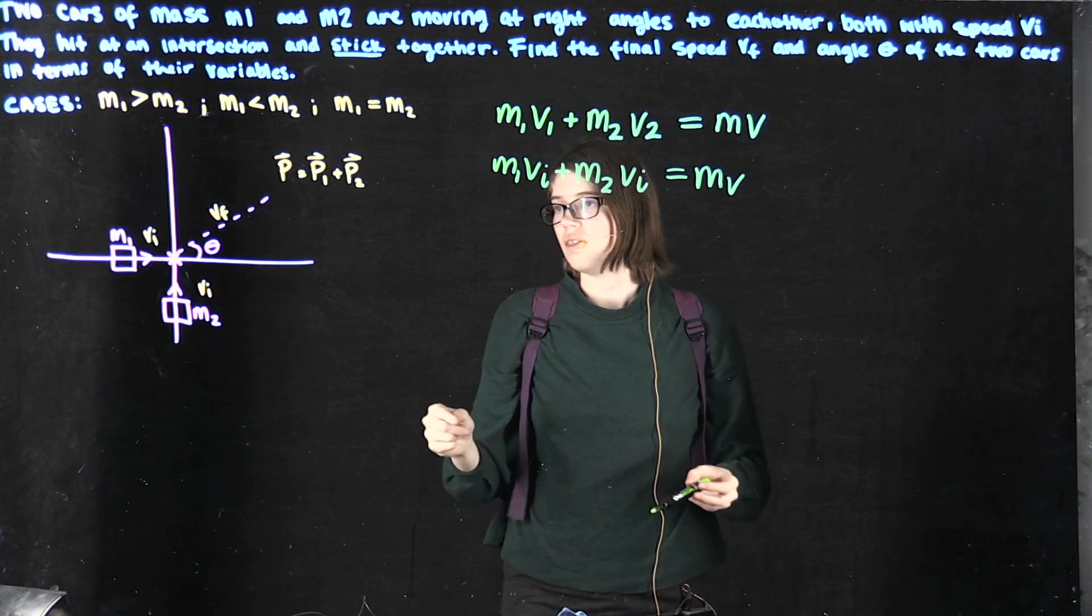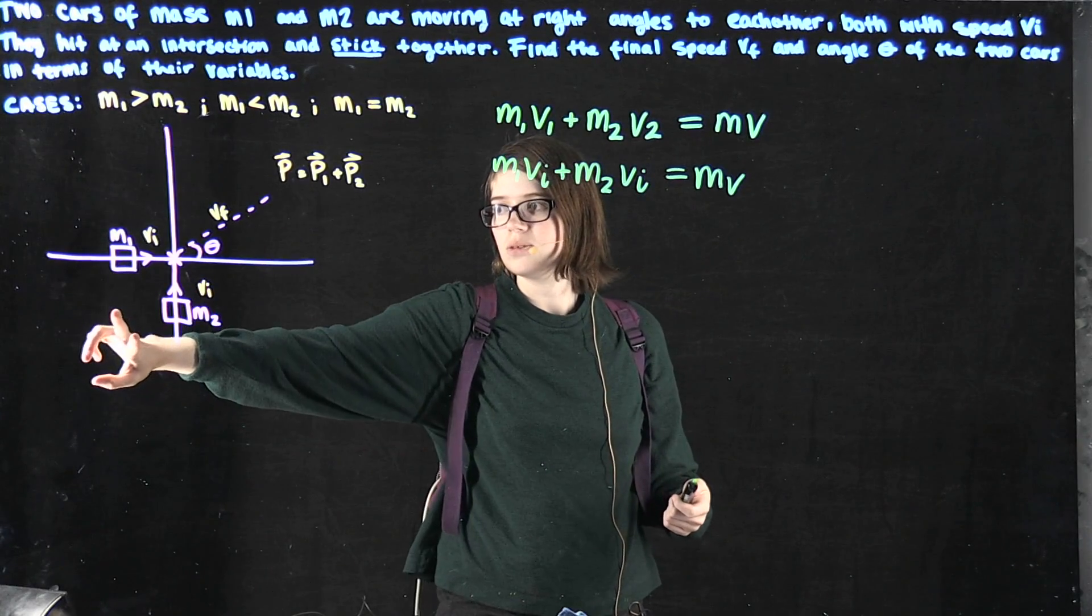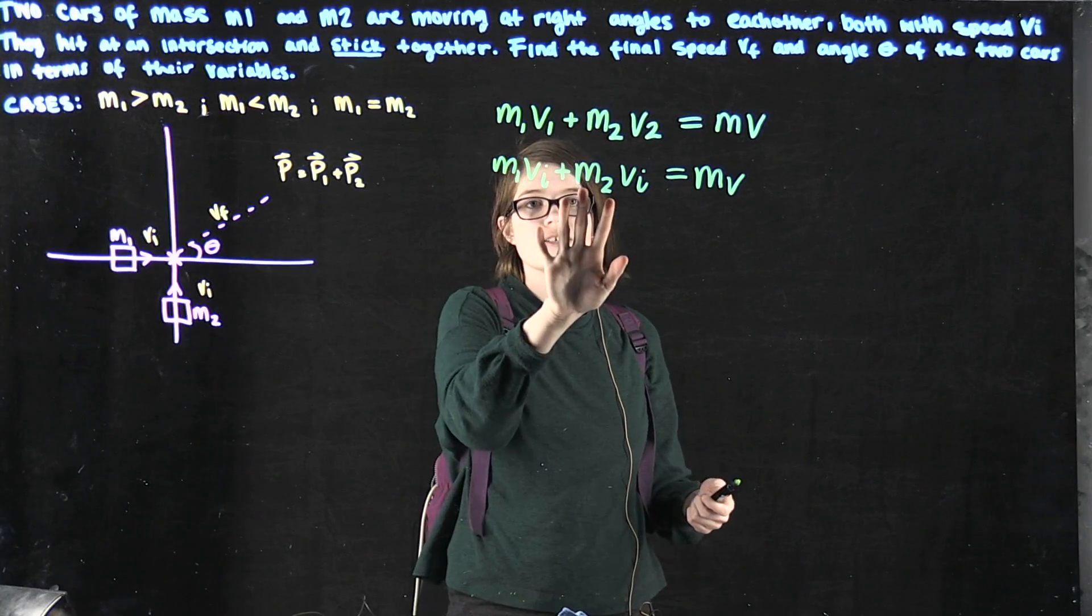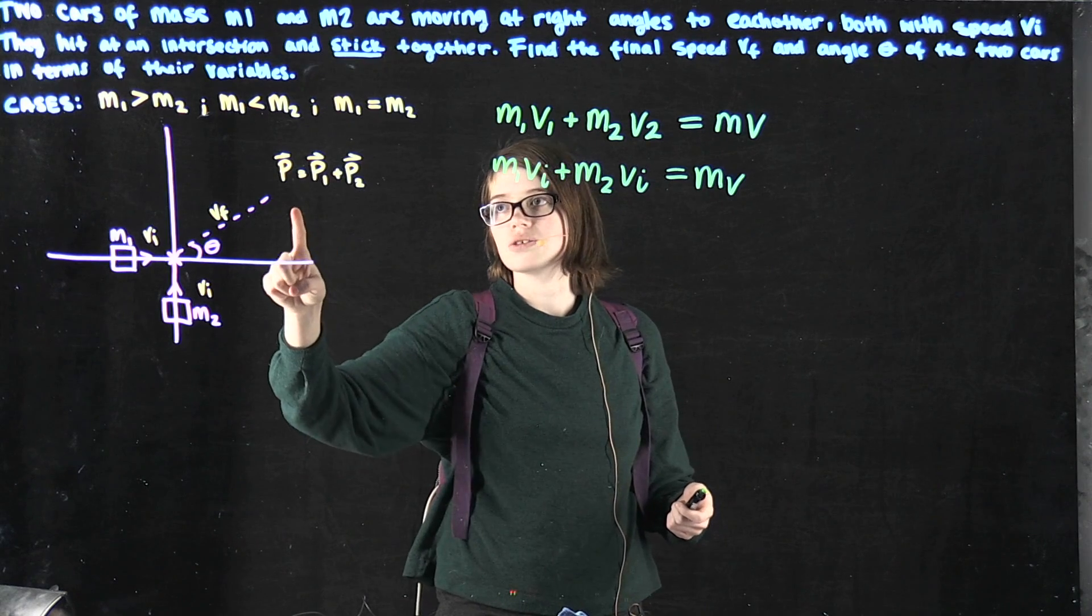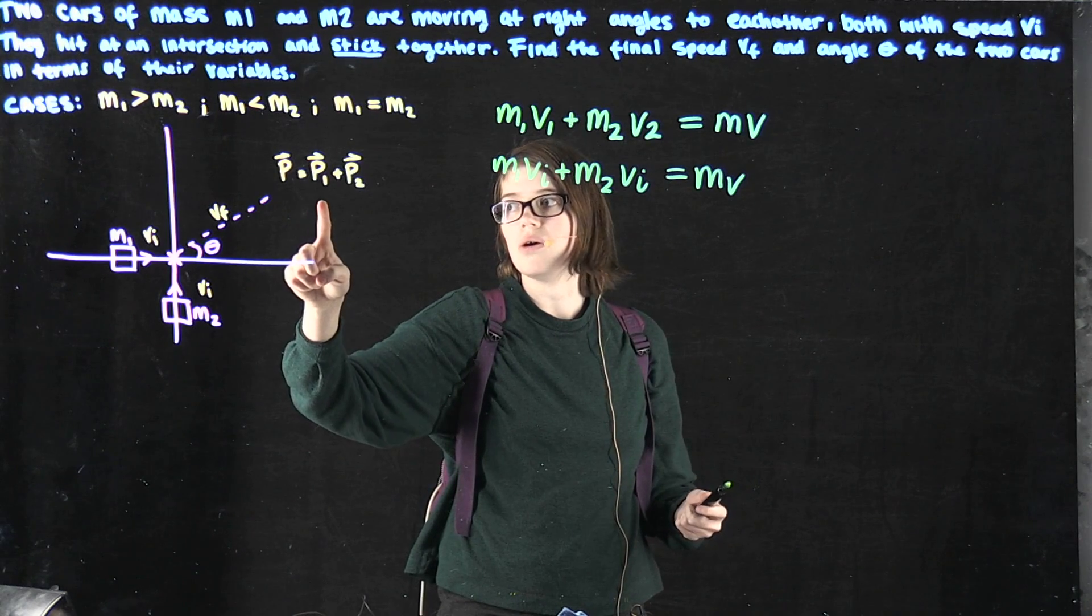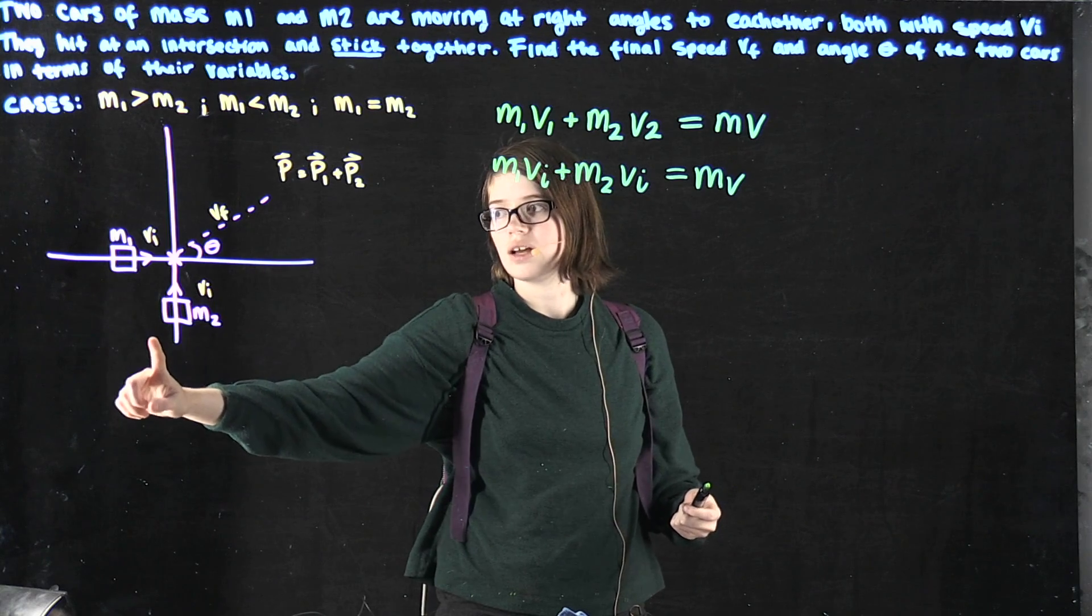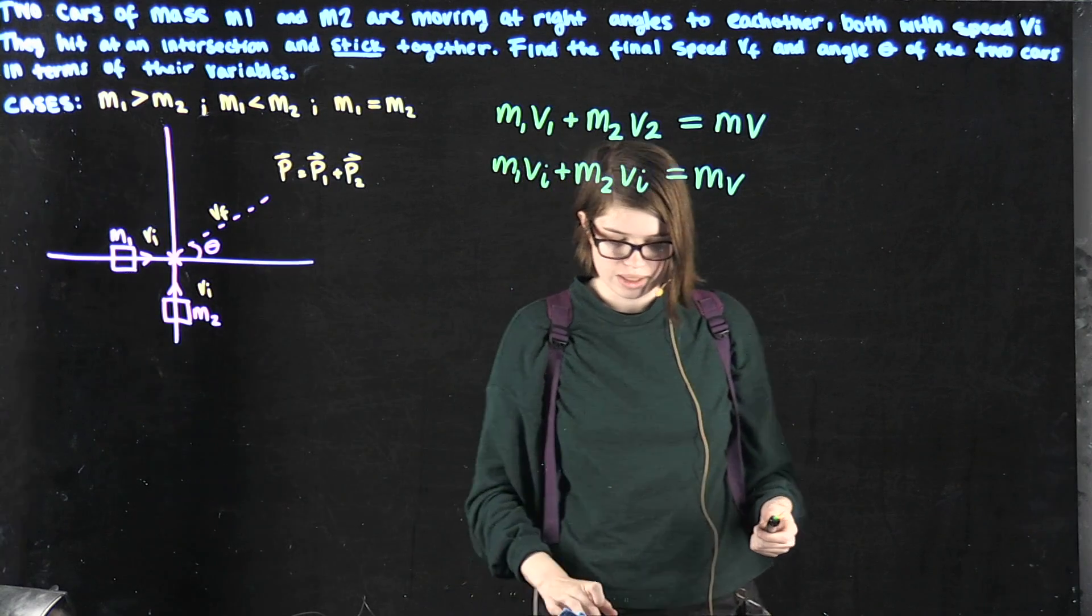Because the masses are equal to each other and we know the conservation of momentum equation, the final momentum is going to equal the momentum of this car and the momentum of this car once they stick together.